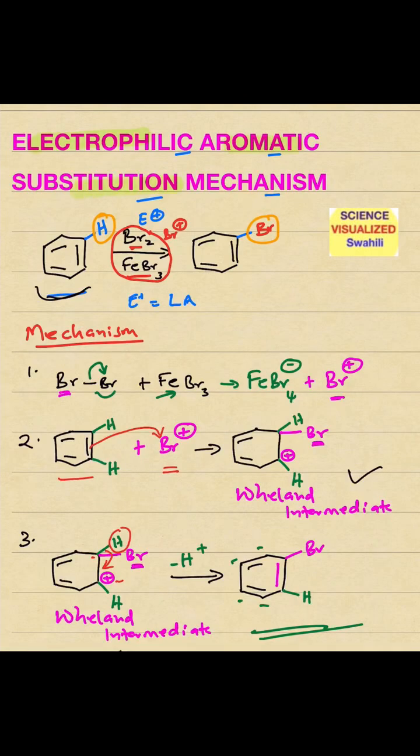In electrophilic aromatic substitution reaction mechanism, first of all, the hydrogen is replaced with the electrophile. In this case, if you are using Br2 and FeBr3, the electrophile is Br+, so you end up substituting the hydrogen with Br.